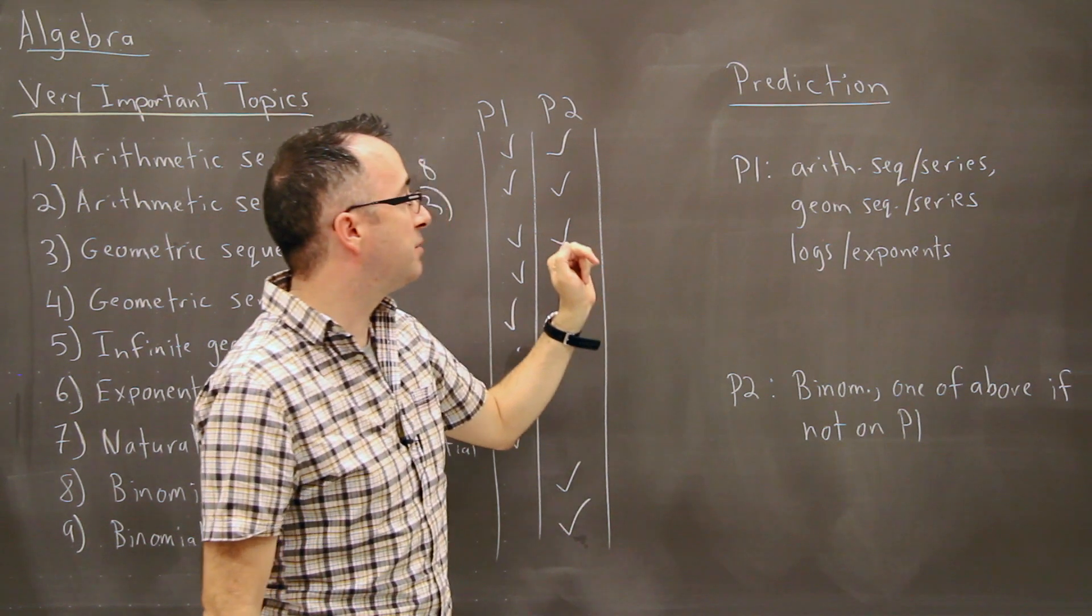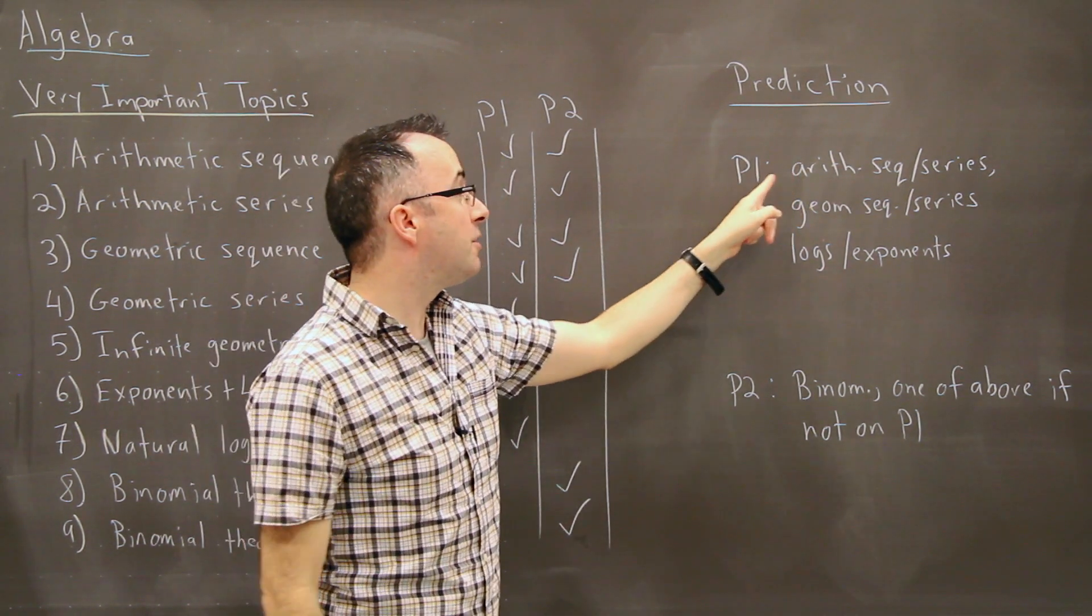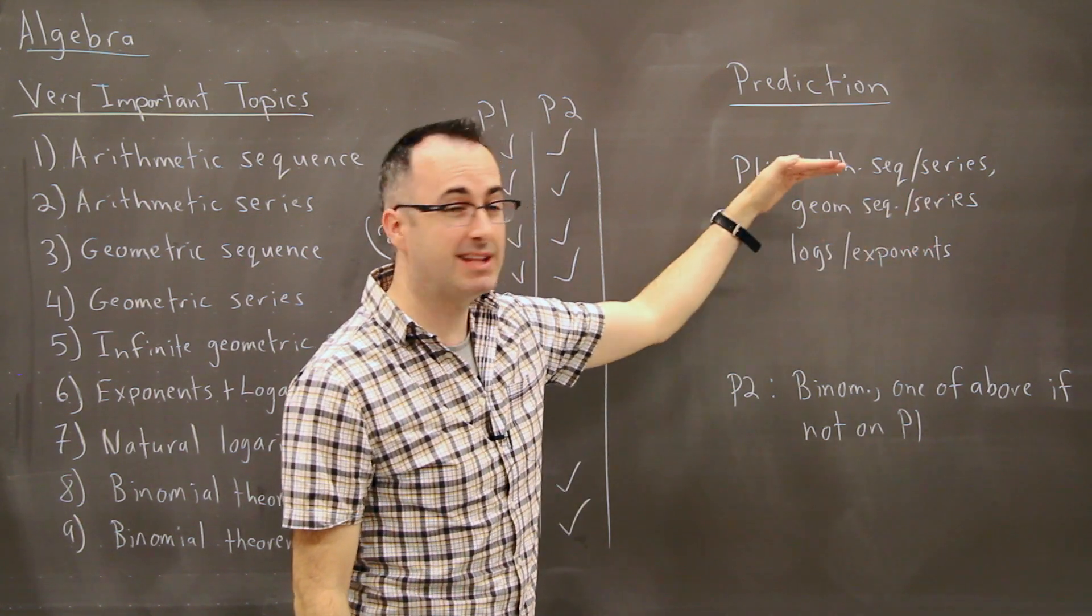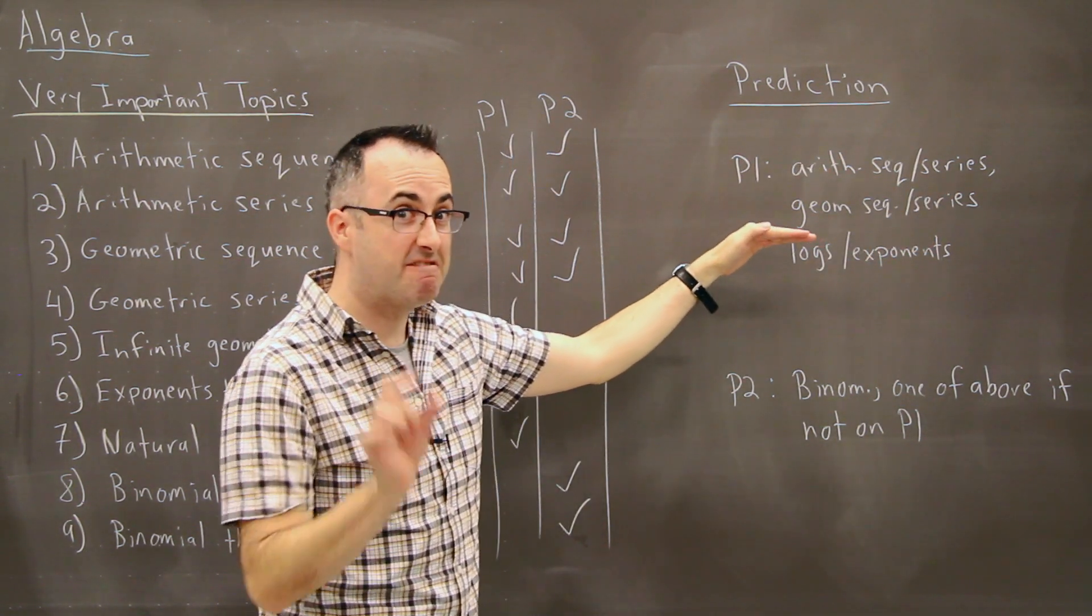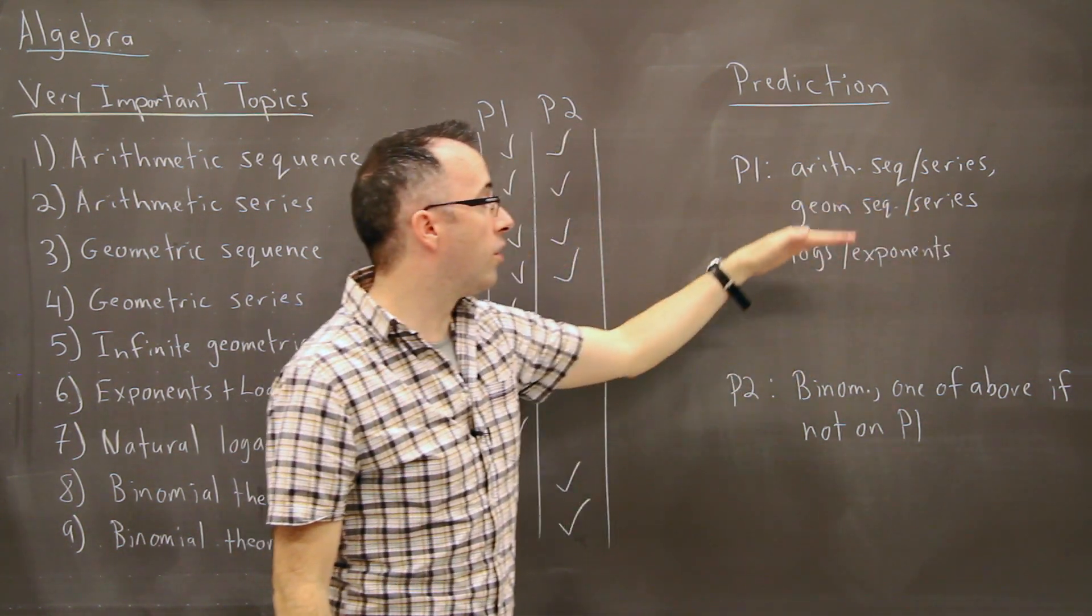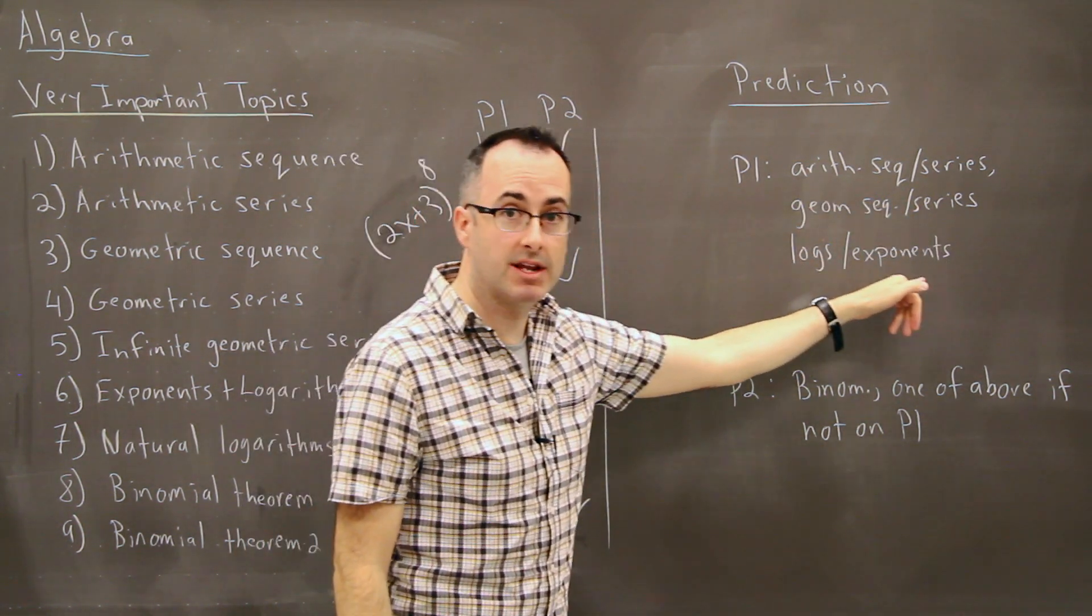In other words, if I had to predict on a Paper 1 for algebra, I would say you're probably going to get arithmetic sequence or series as the most likely thing. Second most likely, very close behind it, is geometric sequence and series. Or it could also be logarithms and exponents.